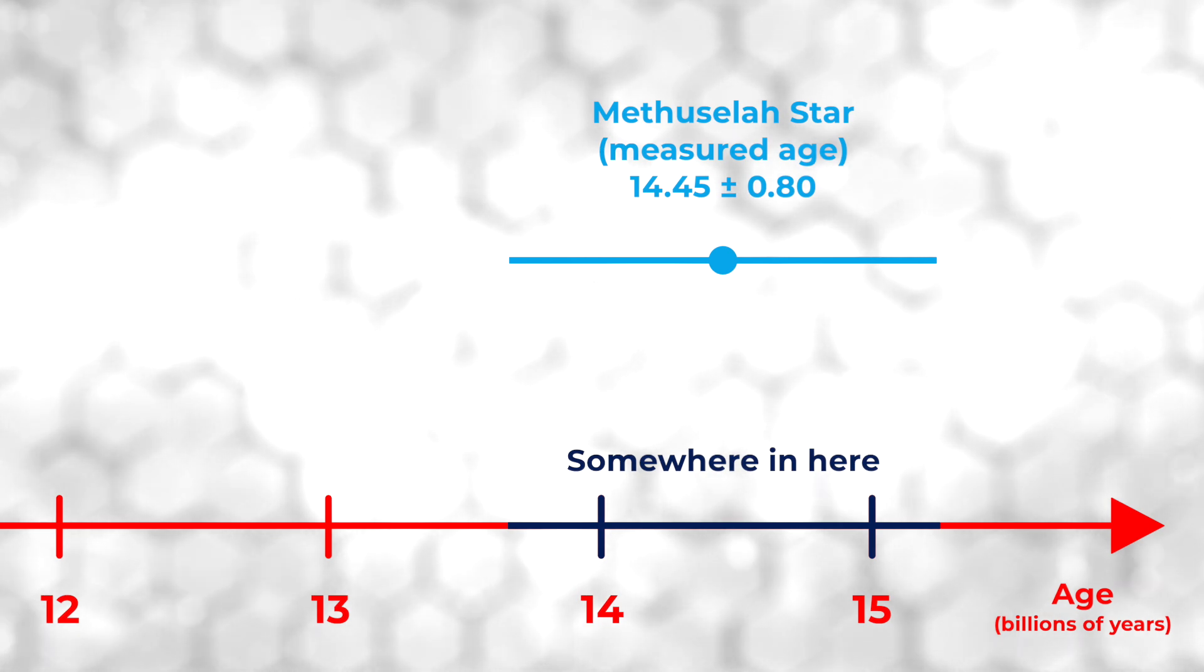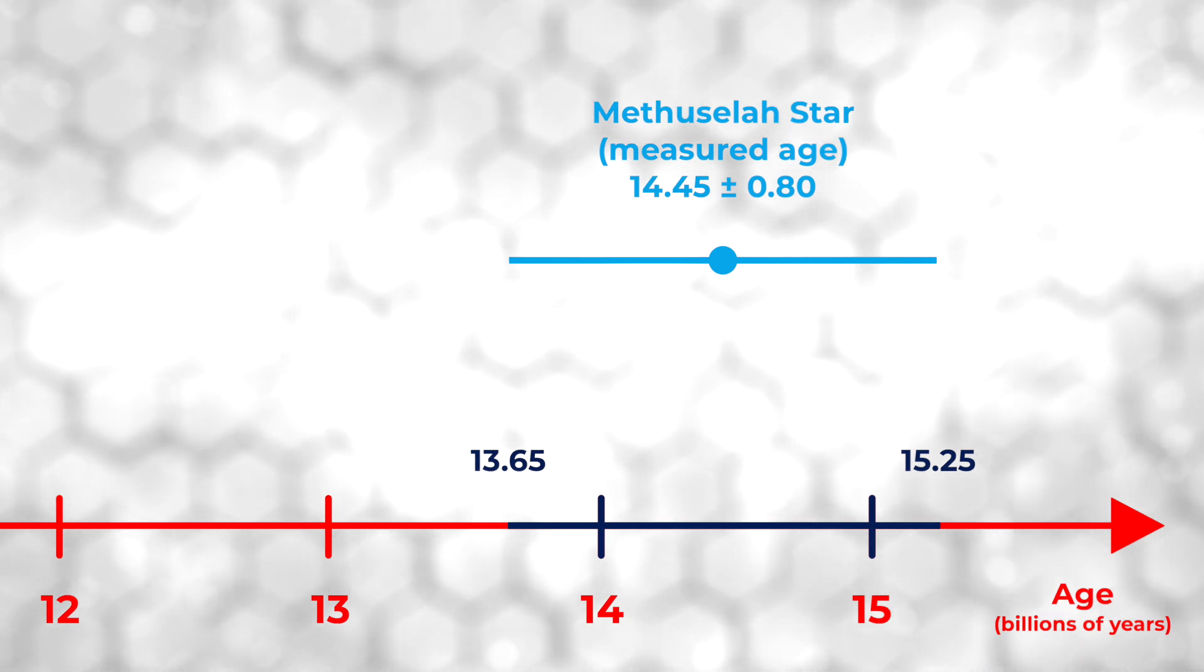If you add and subtract the uncertainties to the estimated age, you find that the age of the star is between 13.65 to 15.25 billion years. Technically, what we know is that there is a 70% chance that the true age is in that range. And yes, that means that there is a 30% chance that the true age of the star is outside that span.